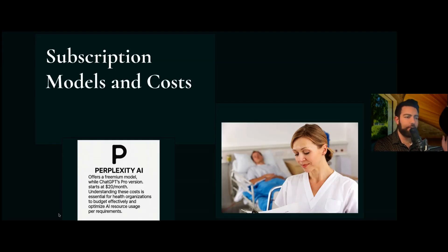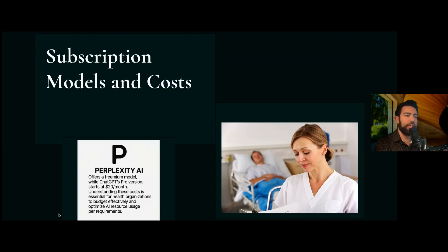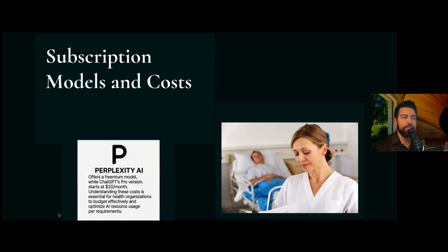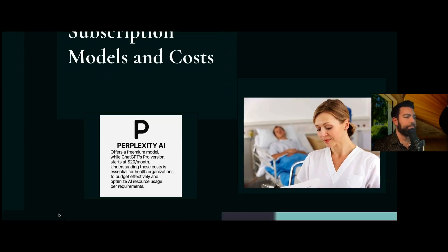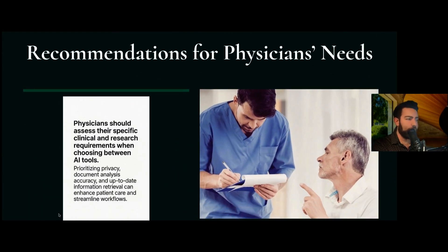Pricing also depends on how much you use them — there are tokens and API keys — and exact pricing you would have to check on their websites. Overall they're about the same cost for what they offer. Perplexity's goal is not to help you with your H&P and clinical decisions; it's really there for retrieval of information, providing the latest research, summarizing medical documents, and helping with inline citations.